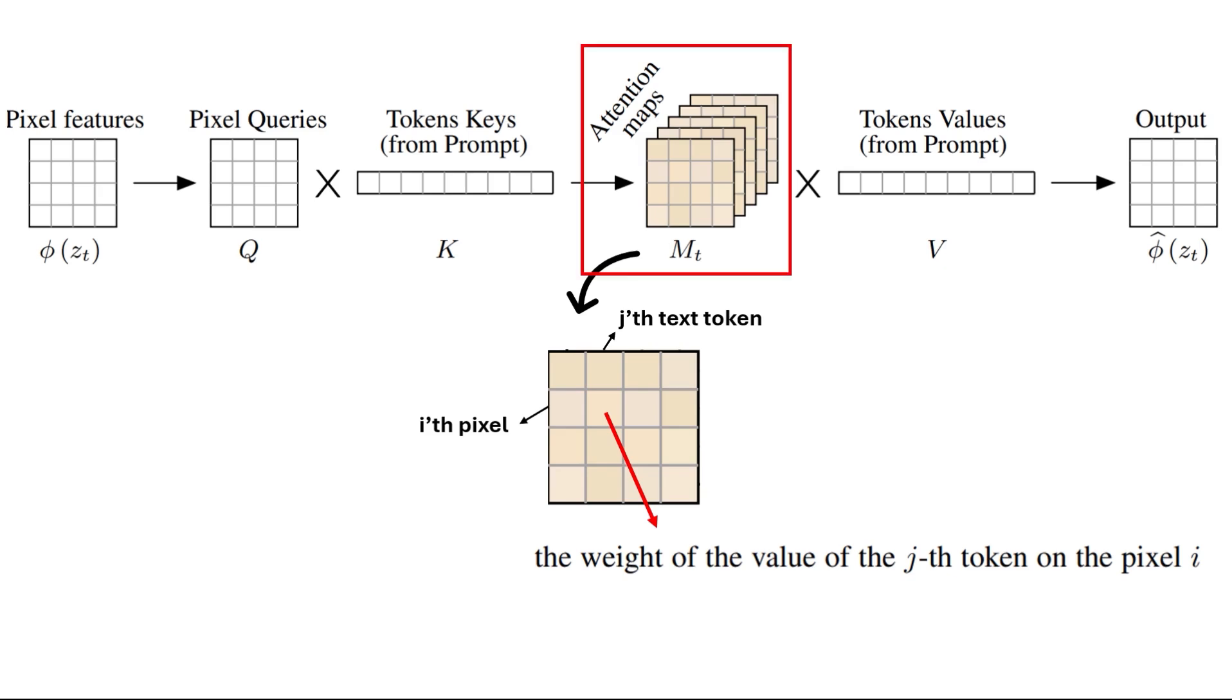What this attention map should represent is the similarity between the query and the key, in our case the similarity between the pixel features and text features.